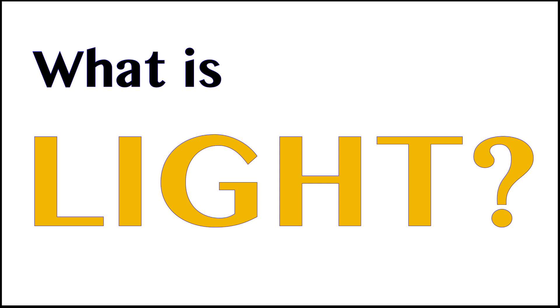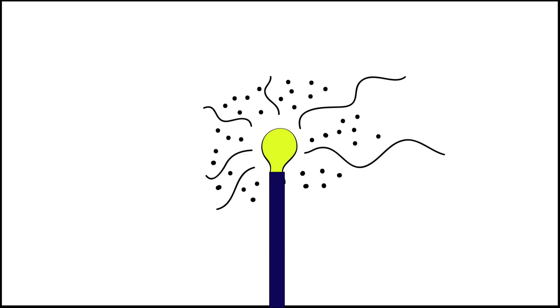But what is light? Light can be described both as a particle, or a photon, and as a wave of energy. The absorption of light is how we see color.